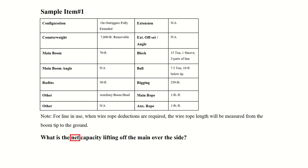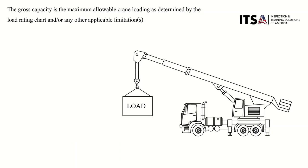The question asks: what is the net capacity lifting off the main over the side? In order to understand net, we need to first understand gross capacity. Here is the definition NCCCO gives: gross capacity is the maximum allowable crane loading as determined by the load rating chart and any other applicable limitations — meaning it's the maximum load the crane can handle for a given configuration regarding tipping stability or structural integrity.